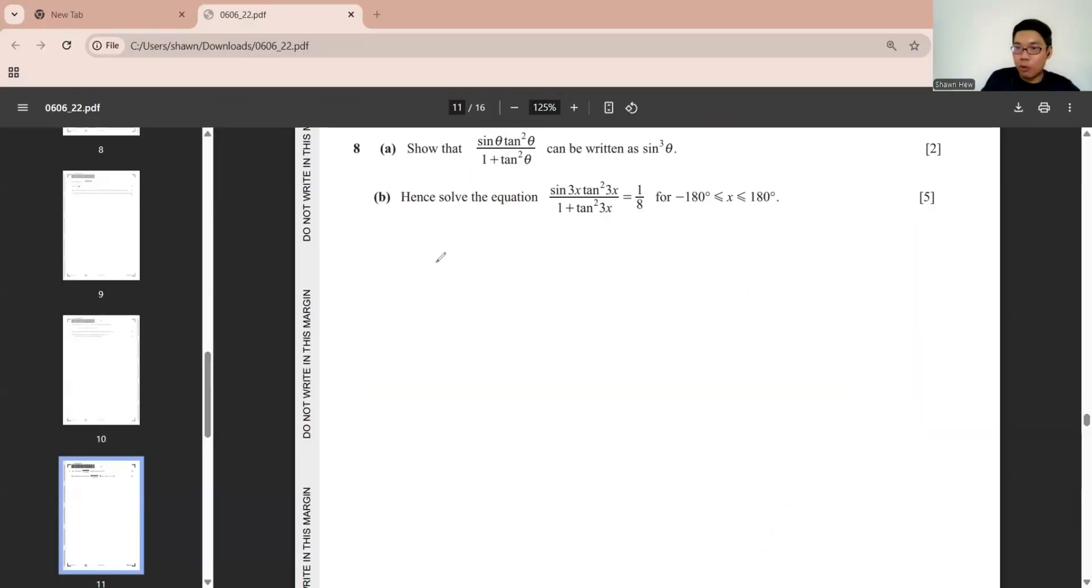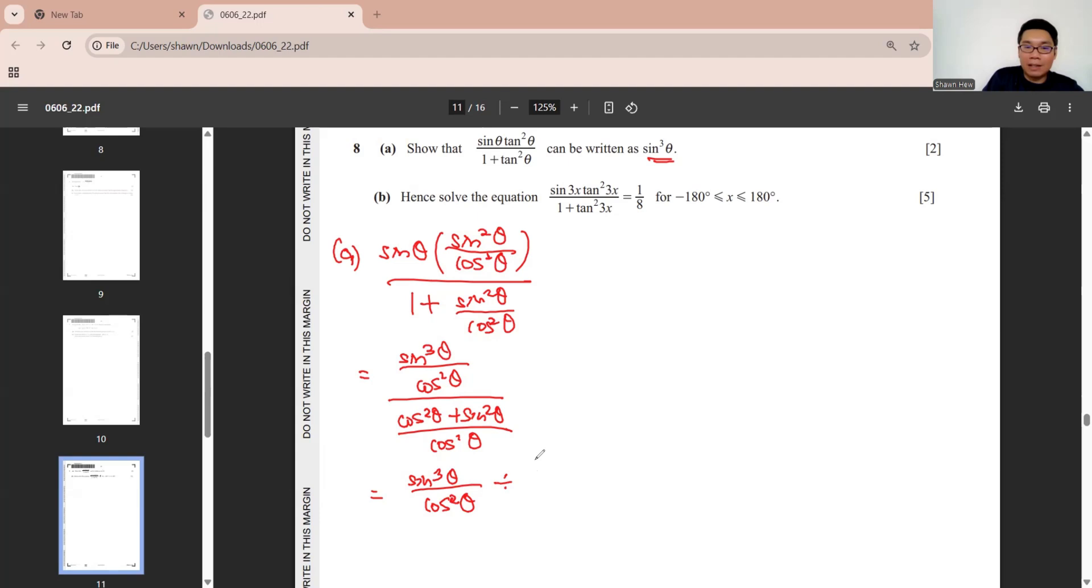Question 8 is trigonometry. It appears in both paper 1 and paper 2. First part they ask you to show this thing can be written in this. We directly apply first step. Everything change to sine and cos only. Top part already formed sine cube. Bottom we join them into single fraction. We make them same denominator. We divide by this. And this thing is 1. Cos square theta over 1. And then here and here cut cut. Successfully shown it.